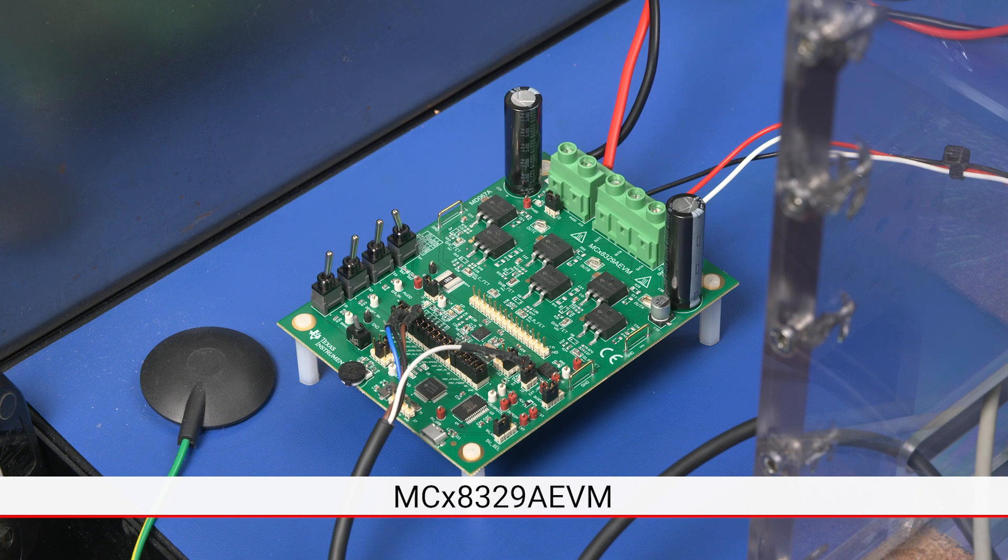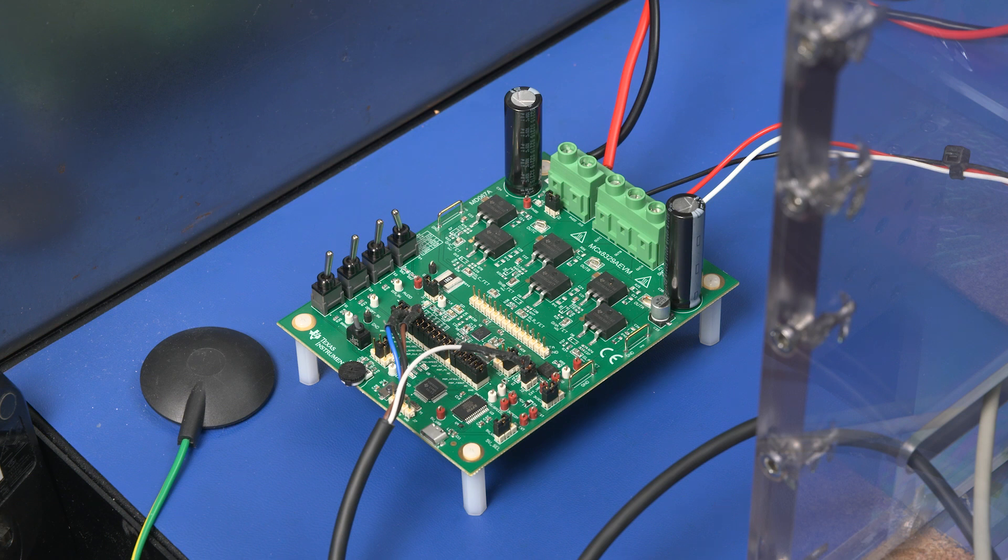The MCX8329A EVM provides sensorless drive to our low inductance motor and is easily controlled through an external reference voltage or by manually setting an onboard potentiometer. When power is applied, the driver quickly ramps to the preset operating speed.